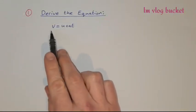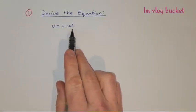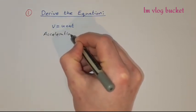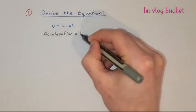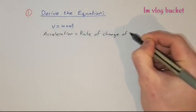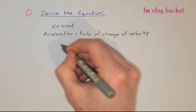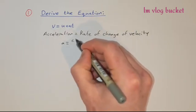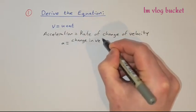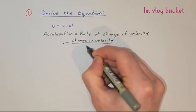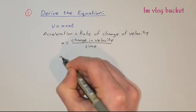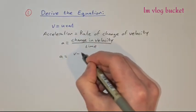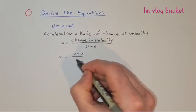We're asked to derive the equation v = u + at. To derive this one, we start with the fact that acceleration is equal to the rate of change of velocity. So that means acceleration — we can substitute in and say a — is equal to the change in velocity divided by time. The change in velocity is our final velocity minus our initial velocity, so it's v minus u, and time is t.